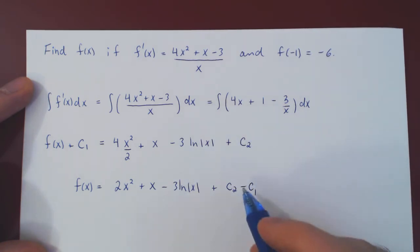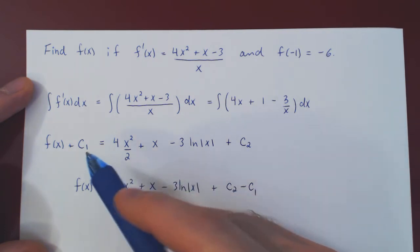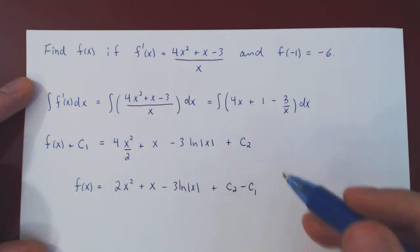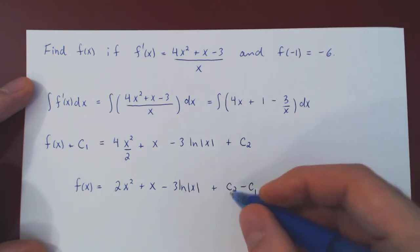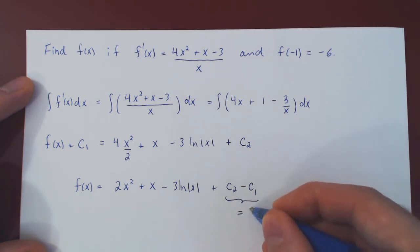But if you think of what both c₁ and c₂ are, c₁ is an arbitrary constant, and so is c₂. And so a difference of arbitrary constants is, yet again, another arbitrary constant. So I'll call this one simply c.